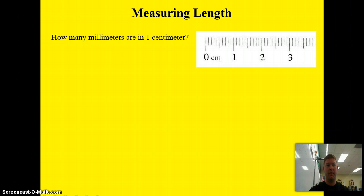So, how do we measure length? How many millimeters are in one centimeter? Well, take a look right here. You can see here's one centimeter, two centimeters, three centimeters. Each of these lines represents a millimeter. So, within one centimeter, there are 10 millimeters. Like we said before, a system of measurement based on the unit of 10.